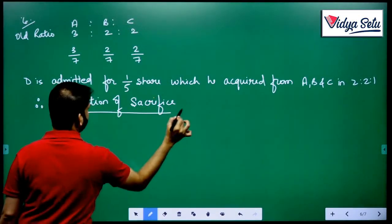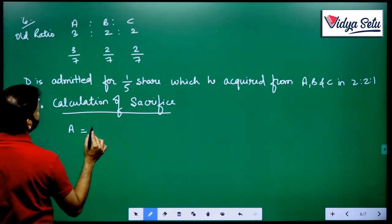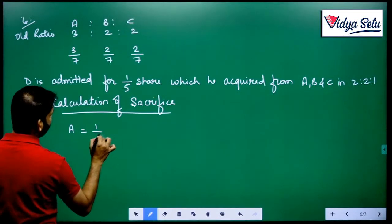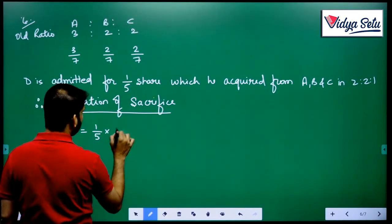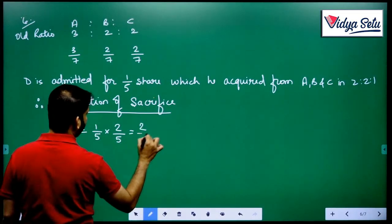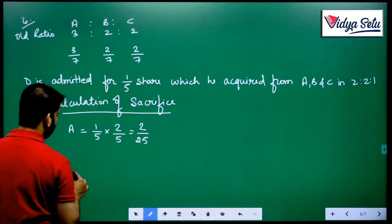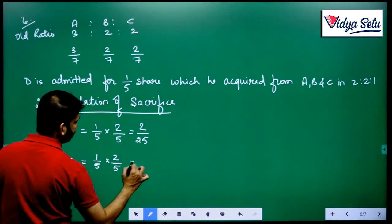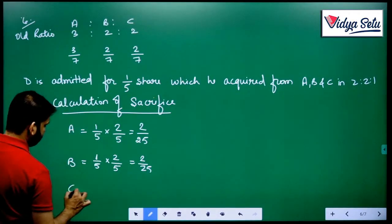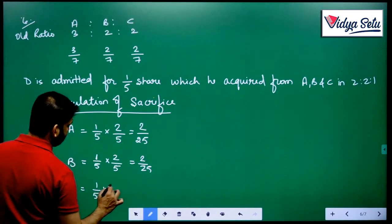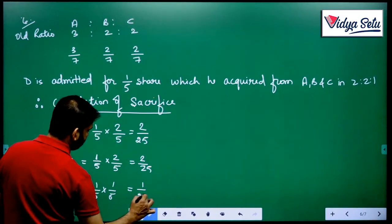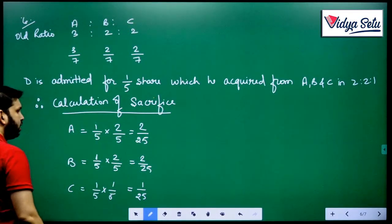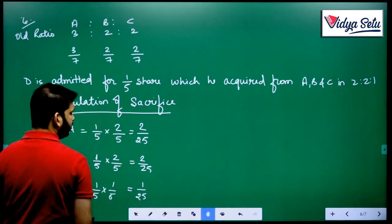Calculation of sacrifice: For A, total is 1/5 multiplied by 2/5, so that is 2/25 sacrificed by A. Sacrifice by B is 1/5 multiplied by 2/5, which is 2/25. And sacrifice by C is 1/5 multiplied by 1/5, equals 1/25. So 2 plus 2 plus 1 by 25 is 5/25, which is 1/5. Now we know how much sacrifice is done by each partner.